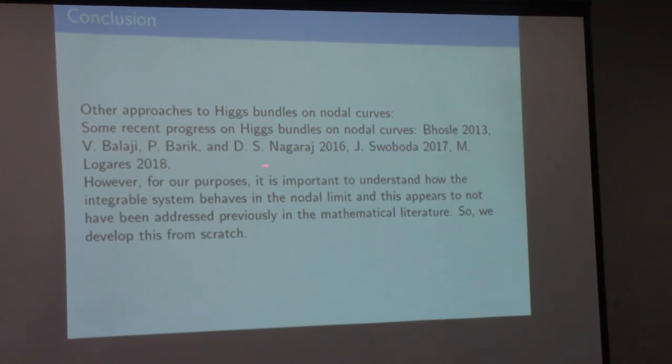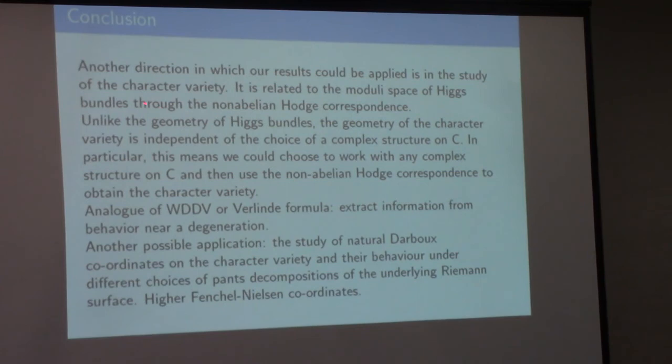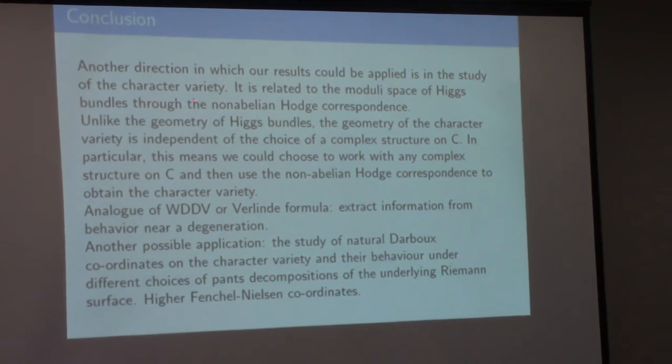There's some recent progress on Higgs bundles on nodal curves. I mentioned some of these papers. For our purposes, it's important to understand not just the moduli spaces, but the integrable system structure on them. As far as we know, this has not been done. One direction where the results could be applied is in the study of the character variety. This is related to the moduli space of Higgs bundles through the non-abelian Hodge correspondence. Unlike the geometry of Higgs bundles, the geometry of the character variety is completely independent of the chosen complex structure. This means you could choose to work with any complex structure of the curve and use the non-abelian Hodge correspondence to obtain the character variety. Another possible application is to the study of Fock-Goncharov coordinates of the character variety and how they behave under different choices of pants decompositions. The keyword there is higher Teichmüller theory.